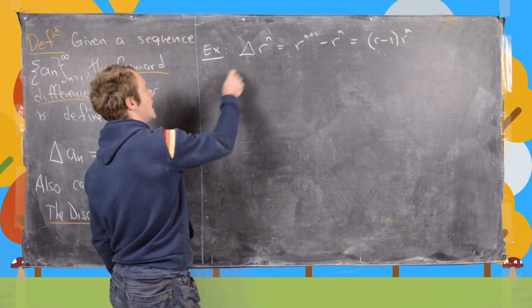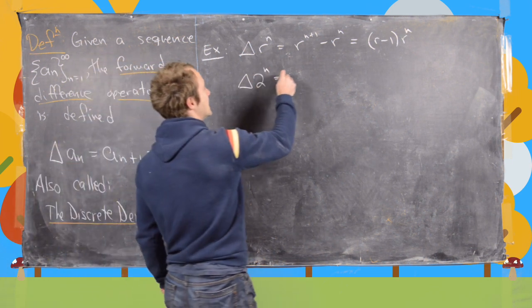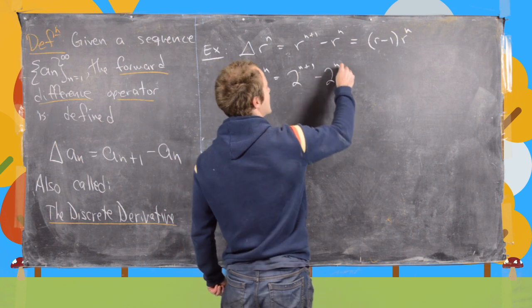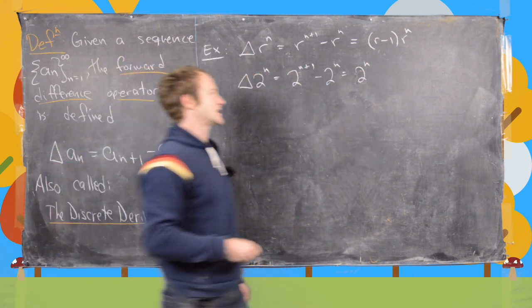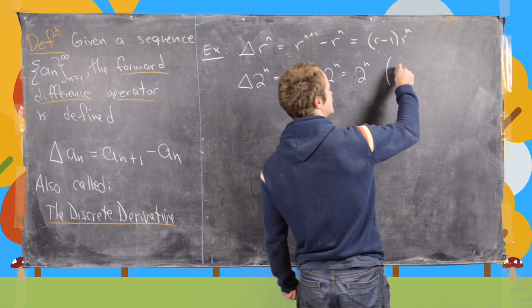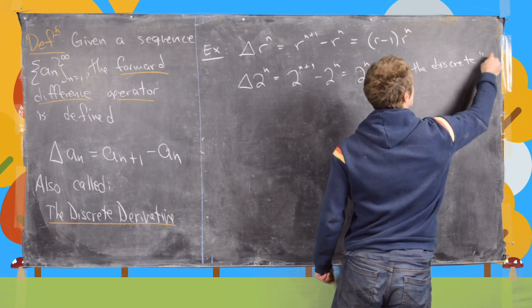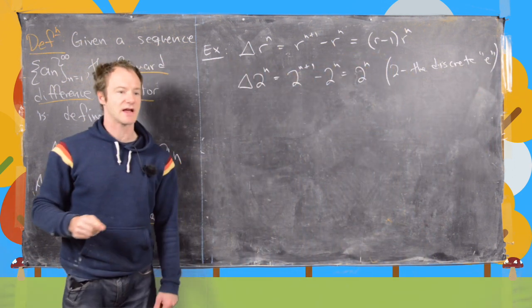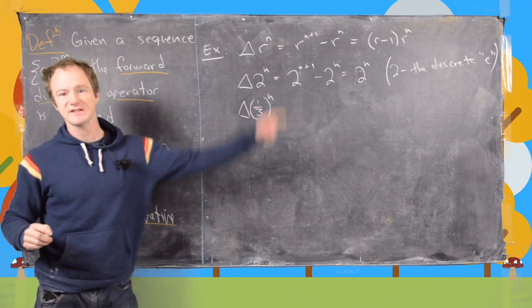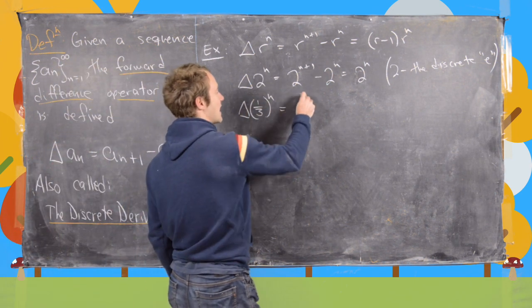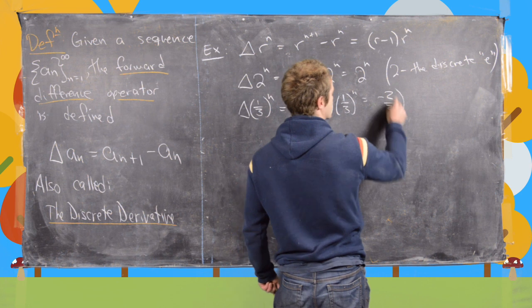For example, delta of 2^n equals 2^{n+1} minus 2^n, which is (2-1)·2^n = 2^n. This is why 2 is sometimes called the discrete e — the discrete natural base. For (1/3)^n, using the formula we get (1/3 - 1)·(1/3)^n, which is minus (2/3)·(1/3)^n.